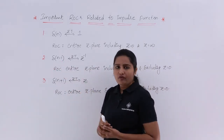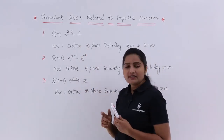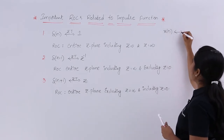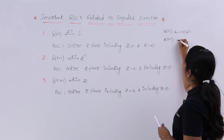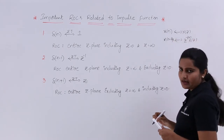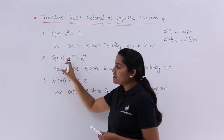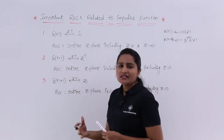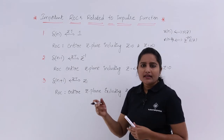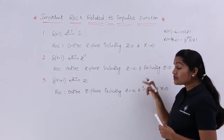Coming to δ[n-1], the Z-transform is Z⁻¹. Using the time shifting property in Z-transforms: if X[n] has Z-transform X(Z), then X[n-1] has Z-transform Z⁻¹·X(Z), and X[n-m] has Z-transform Z⁻ᵐ·X(Z). In the same way, since δ[n] has Z-transform 1, δ[n-1] has Z-transform Z⁻¹·1 = Z⁻¹, which equals 1/Z. If we equate Z=0, we can see that Z=0 must be excluded. So the ROC is the entire Z-plane including Z=∞ but excluding Z=0.